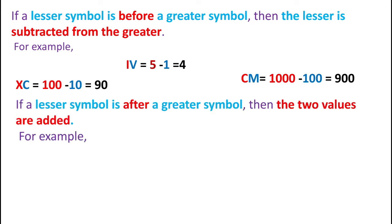The next rule: if a lesser symbol is after a greater symbol, then the two values are added. For example, VI — V stands for 5 and I stands for 1. Adding them gives a value of 6.